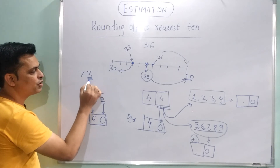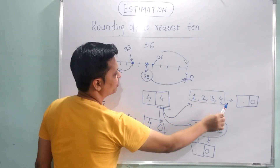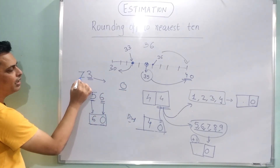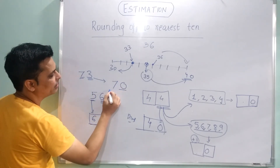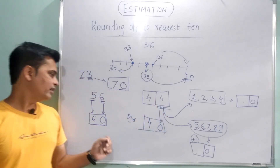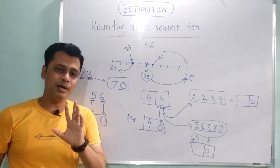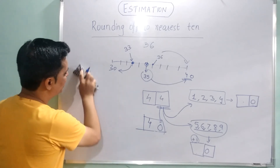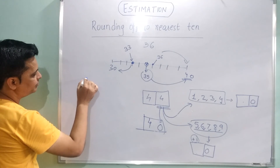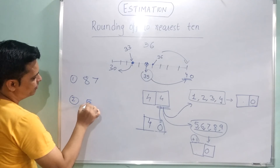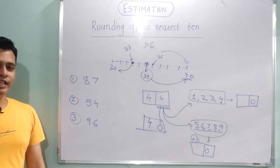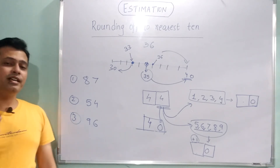73 है, तो ones place पे 3 है। 3 की जगह 0 लिखोगे और tens place वैसा ही रहेगा — answer आया 70। तो 73 का nearest 10 = 70, 44 का = 40, 56 का = 60। इस तरह से nearest 10 आप आराम से कर सकते हो। कुछ questions practice के लिए दे रहा हूँ — comment section में solve करके बताना। इसके बाद हम देखेंगे round off to nearest 100।